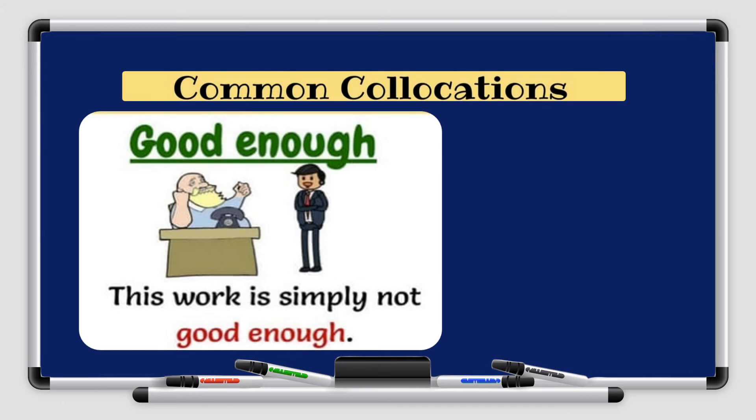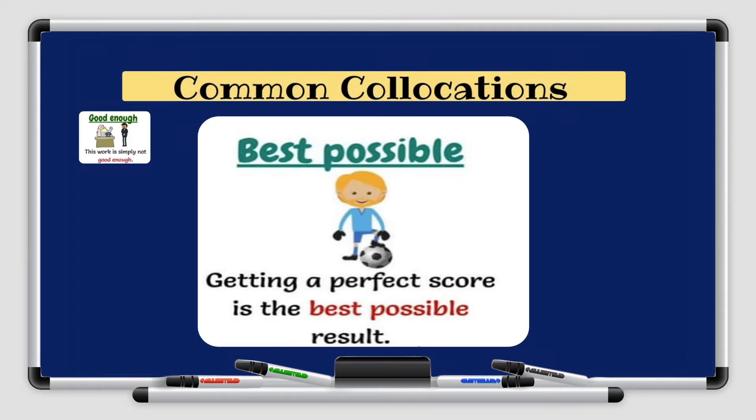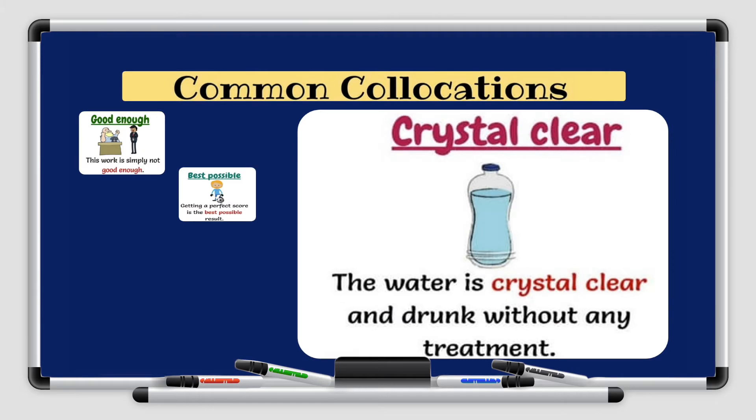Let's look at some of the common collocations in the English language. You have the collocation good enough. This work is simply not good enough. Another common collocation is best possible. For example, getting a perfect score is the best possible result. And the third common collocation in English is crystal clear. You usually hear that when people are talking about liquid substances. The water is crystal clear, so it's clear like crystal.